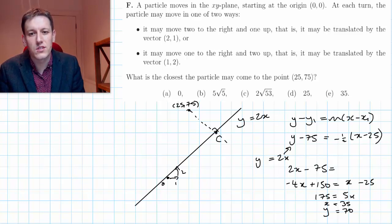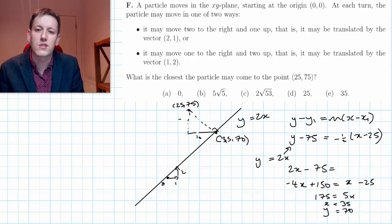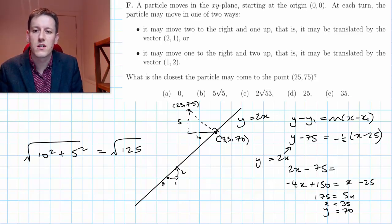So x equals 35, y equals 70 is going to be the point here, and that's the closest one. I just need to work out the distance. I've got a distance of 10 across here and 5 up, so by Pythagoras the answer to the question is the square root of 10 squared plus 5 squared, which is the square root of 125.